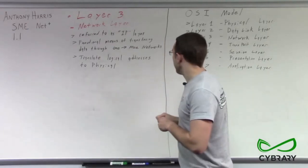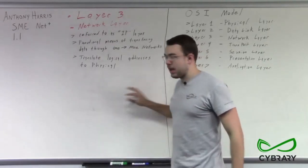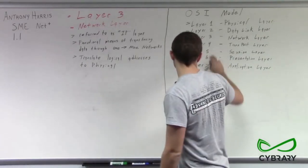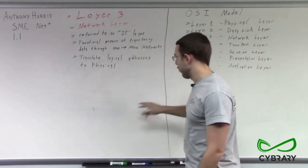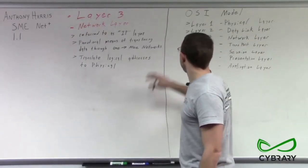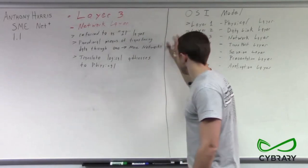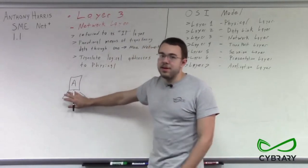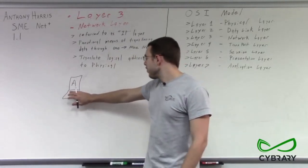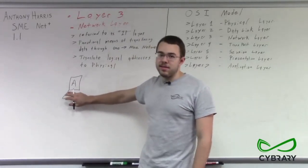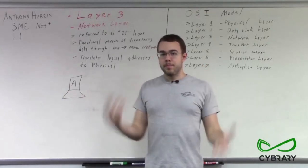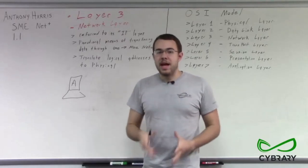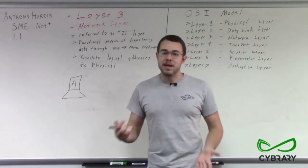Let's talk about the layers we've covered so far. In this diagram, we're going to be omitting layers 4, 5, 6, and 7 for simplicity's sake, but in order to get a better understanding of layers 1, 2, and 3, let's draw them out. If we have computer A here and computer A needs to send a data packet, it's going to take the packets it needs to send and break them down into data that can be transported over a physical means.